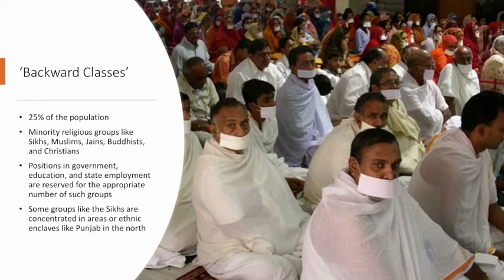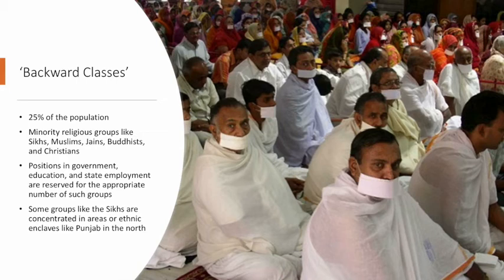In addition to Hindu caste groups, the Indian state also recognizes what they call Backward Classes, about 25% of the population — a very significant and large group. For the Backward Classes, we're talking about minority religious groups such as Sikhs, Muslims, Jains, Buddhists, and Christians, all of whom are recognized to be at a disadvantaged position relative to the Hindu majority. Under affirmative action, positions in government, education, and state employment are reserved for these groups. Some groups, like the Sikhs, are geographically concentrated — you find a large Sikh population in northwest India, in the Punjab area.